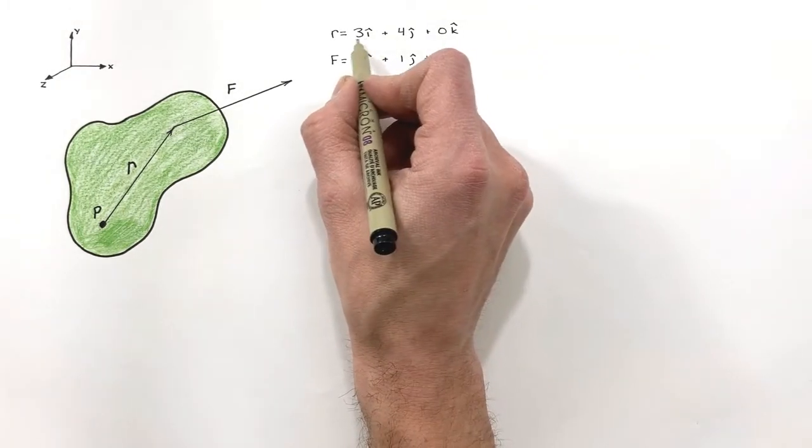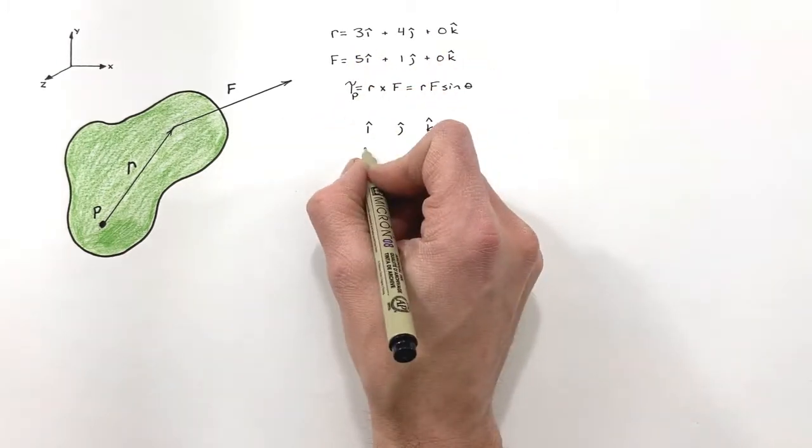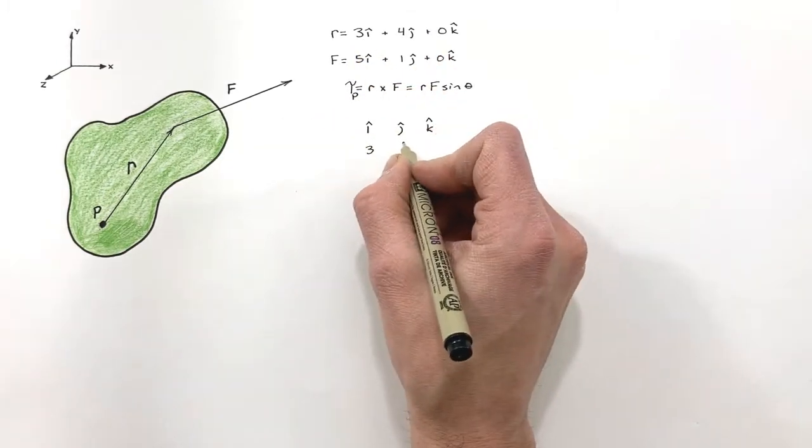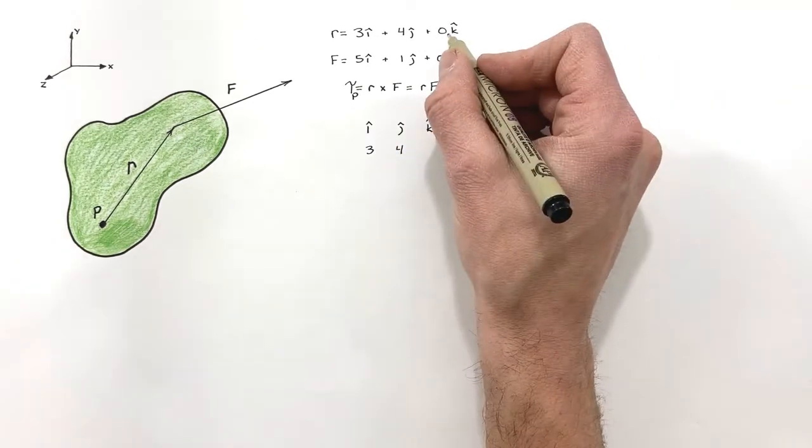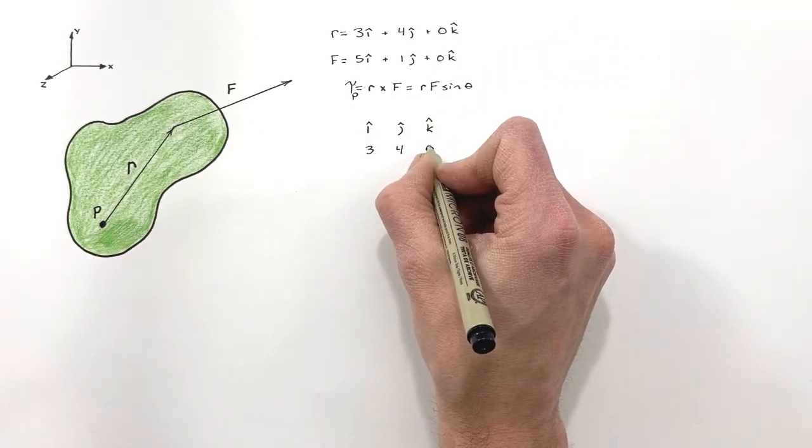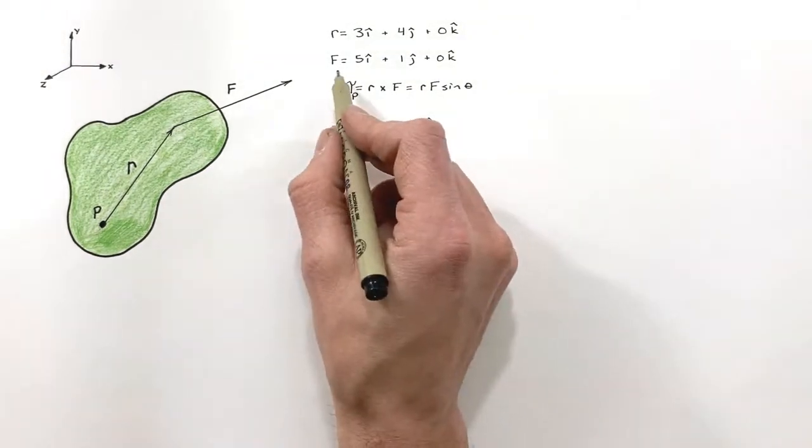So I'm going to take my components up here and substitute them in down here. So beneath the i, we're going to have the i component of our radius vector. Beneath the j, we're going to have the j component of our radius vector. And beneath the k, we're going to have the k component of our radius vector. Then we'll do the same thing with force.